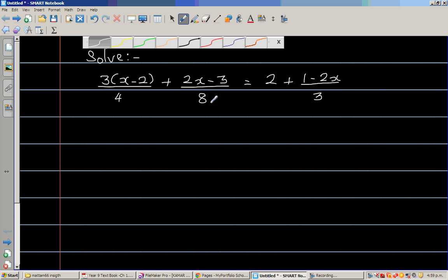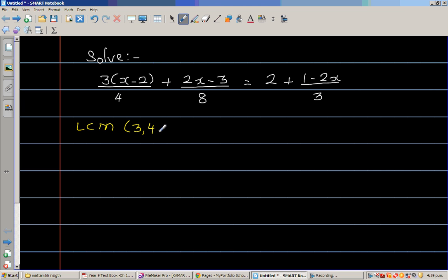The first thing that we are going to do is we're going to find the LCM of the denominators. So the LCM of 3, 4, and 8 is 24, because 3 goes in 24 eight times, 4 goes in 24 six times, and 8 goes in 24 three times. So this is the least common multiple.